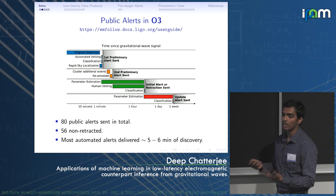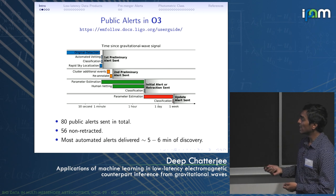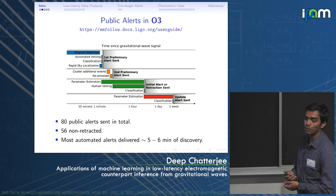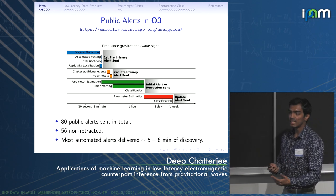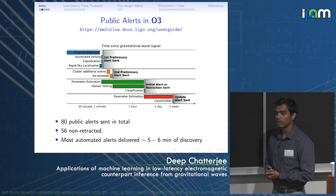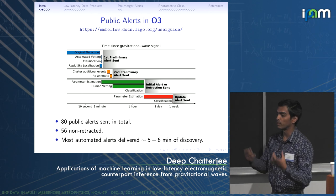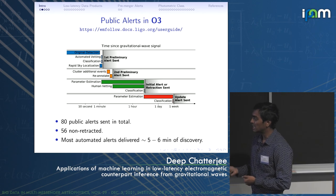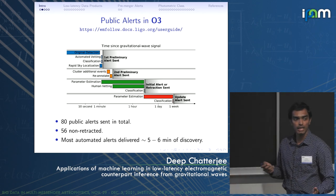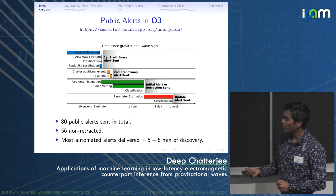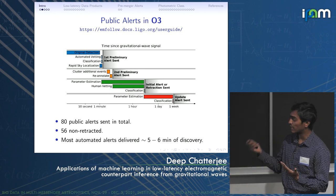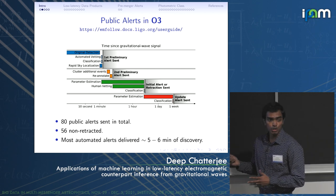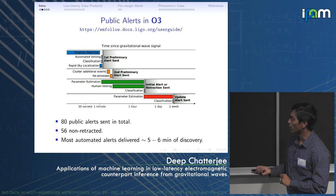At this point, human vetting is done. Humans look at the state of the detector, whether anything unexpected happened, and whether the trigger was caused by a glitch. If not, an initial alert is sent confirming the discovery; if it is a glitch, a retraction is sent. Finally, for a confirmed gravitational wave discovery, results from Bayesian parameter estimation are sent out within days to update the sky localization and source properties. In total, 80 public alerts were sent during O3, of which 56 were non-retracted, and most were delivered within five to six minutes of discovery.